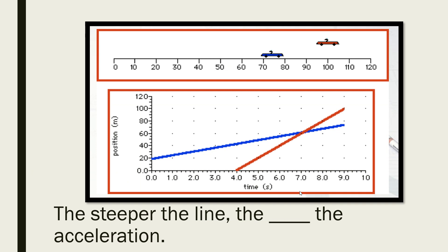Make sure you note in your notes: the steeper the line on these graphs, the faster the acceleration. Even though we don't know a lot about acceleration yet, you do need to know that the steeper the line, the faster the acceleration. In this graph, the red line indicates a faster acceleration because it is more steep than the blue line.